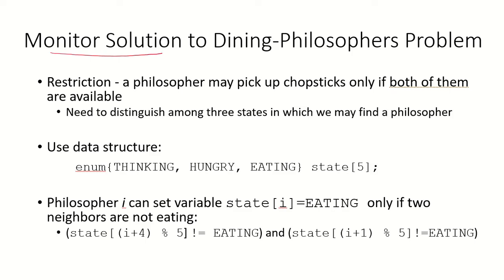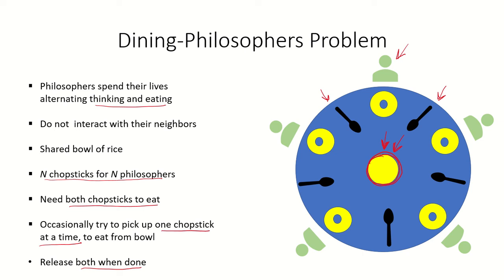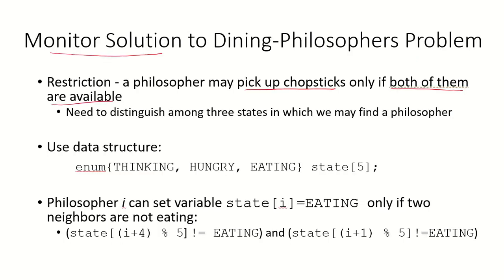In the monitor solution, the restriction placed is that a philosopher may pick up the chopsticks only if both of them are available. So if philosopher p0 wants to eat, he should be able to pick up both chopsticks c0 and c1 if they are available. If philosopher p2 wants to eat, he should be able to pick up both chopsticks c2 and c3. This is the restriction: a philosopher may pick up chopsticks only if both are available.